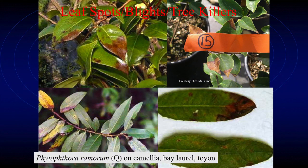Phytophthora ramorum, sudden oak death. These pictures are from when it was first found in San Diego County, our first find back in 2008-2009. But we haven't had it since 2008 - it was only on Camellia in greenhouses with shade cloth and overhead irrigation. Those were the conditions that allow it to exist in Southern California. Once you get rid of all that, you don't have it anymore.